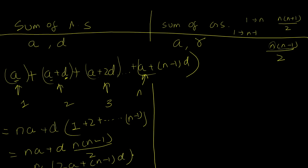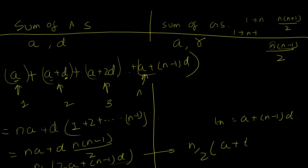Simplifying gives us n over 2 times (2a plus (n minus 1)d). Since the general term is a plus (n minus 1)d, there are two equivalent ways to write this: either n over 2 times (2a plus (n minus 1)d), or n over 2 times (first term plus last term), which is n over 2 times (a plus t_n).